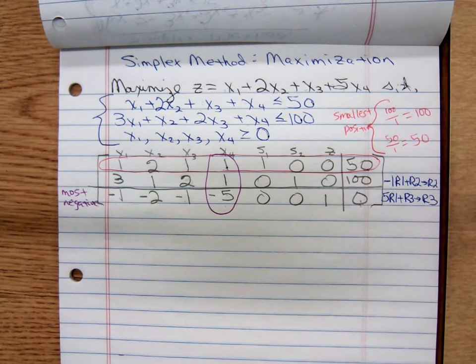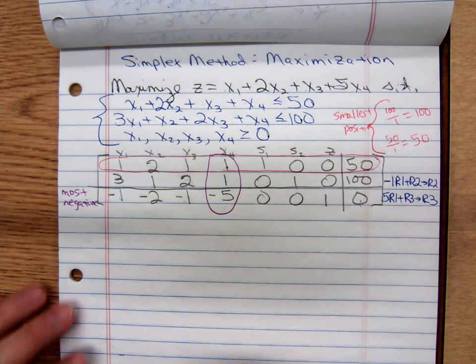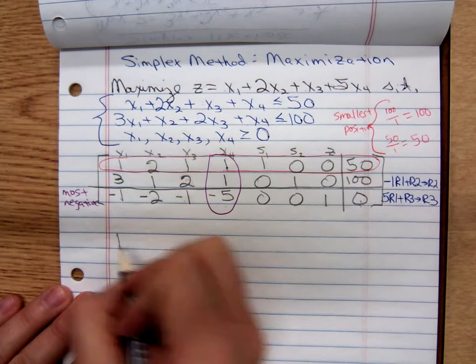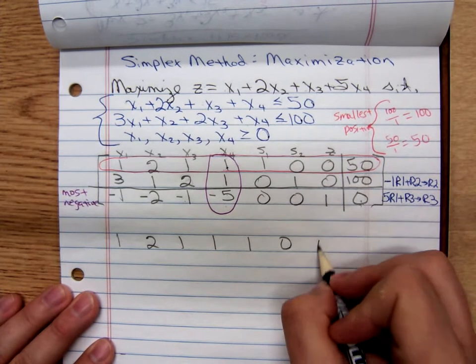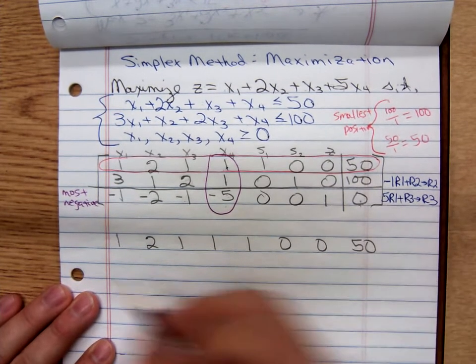So row 1 is not changing. Row 1 is going to stay 1, 2, 1, 1, 1, 0, 0, 50. I'm recopying row 1.